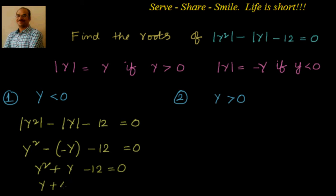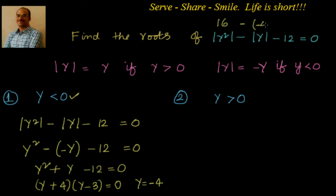This simplifies to y squared plus y minus 12 equals 0. Splitting the middle term gives (y + 4)(y - 3) = 0, yielding y = -4 or y = 3. We only consider y = -4 since we are in the case y less than 0. Verification: (-4)² minus |(-4)| minus 12 = 16 minus 4 minus 12 = 0. Confirmed — minus 4 is a valid solution.